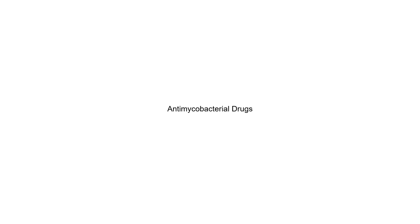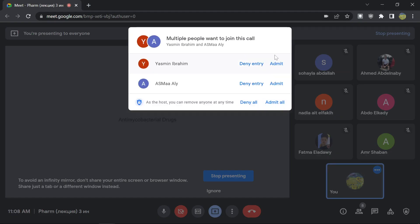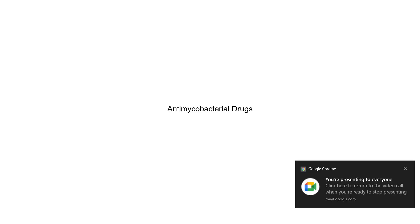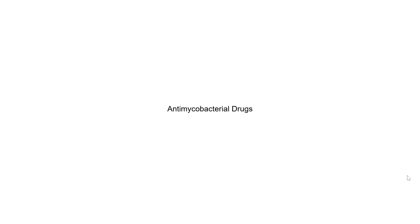Today's topic is antimycobacterial drugs. Mycobacteria are aerobic bacilli that grow slowly, and the cell walls have a specific mycolic acid — which is why they're called mycobacteria. The mycolic acid has lipophilic properties, and that is why they cannot be fully stained with a Gram stain, so a special technique is required for identification of mycobacteria.